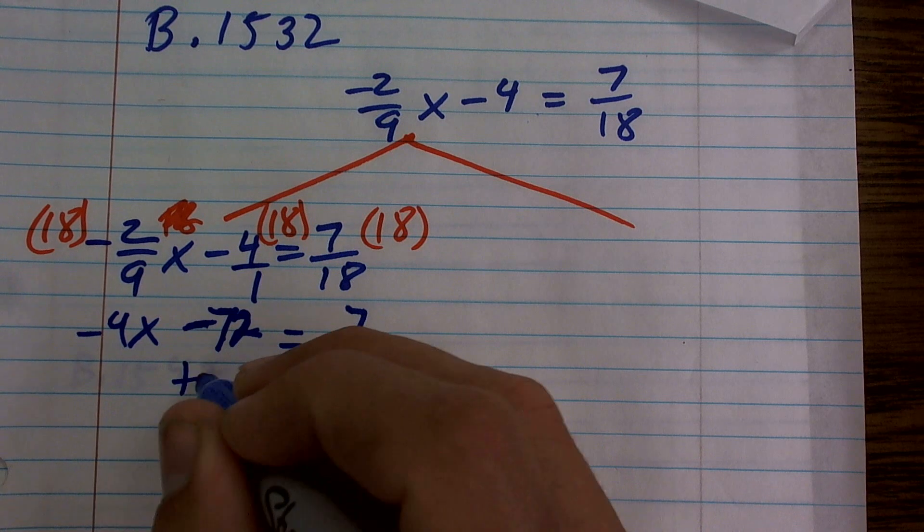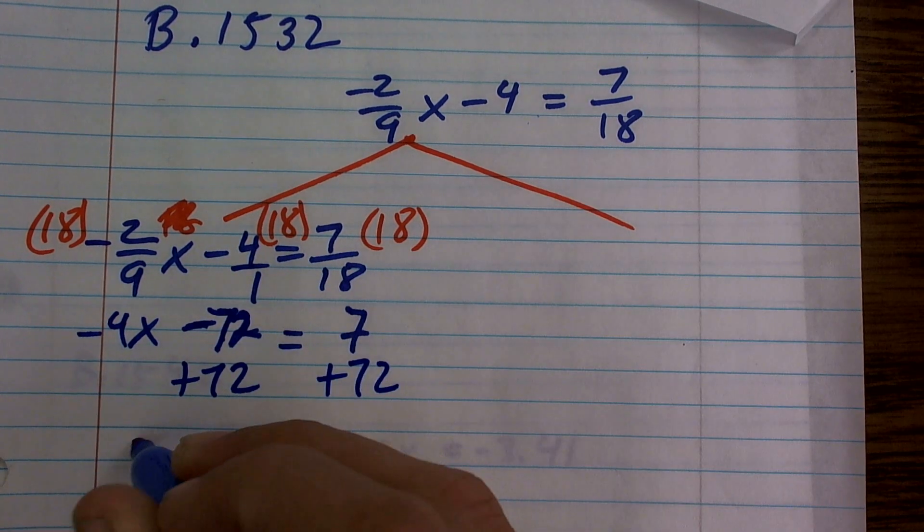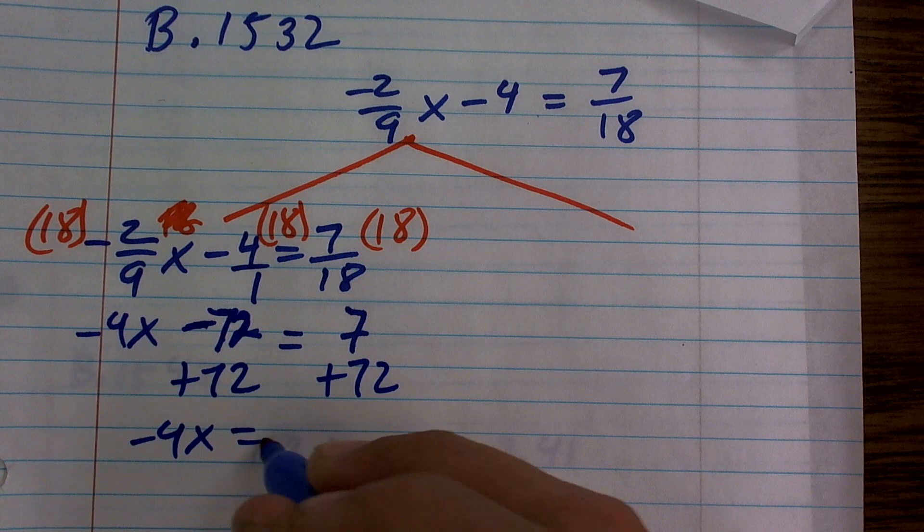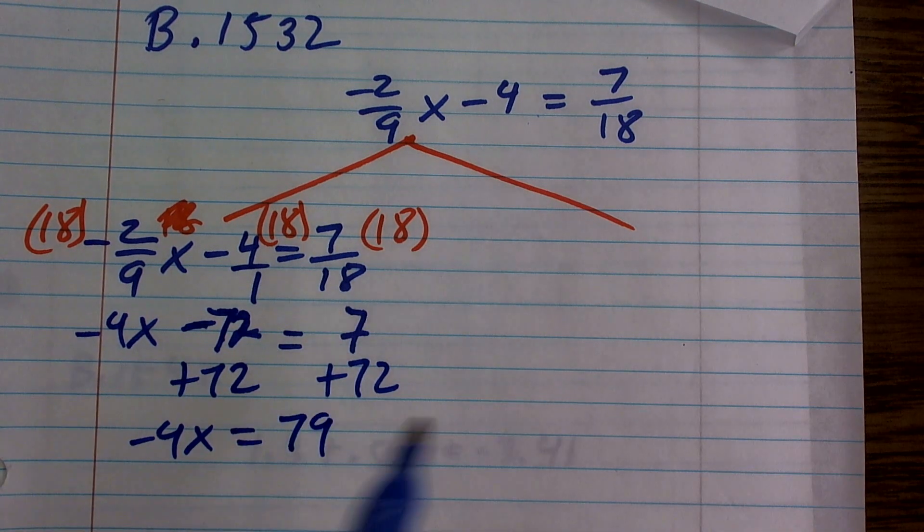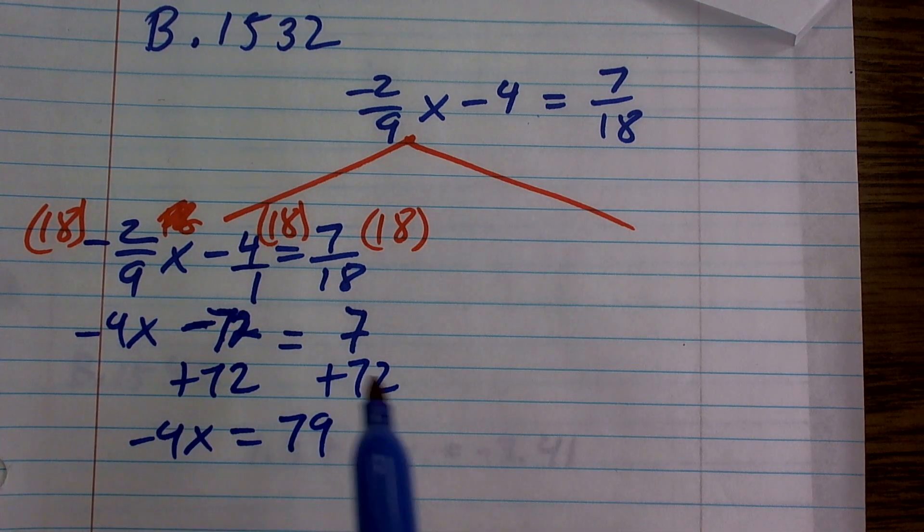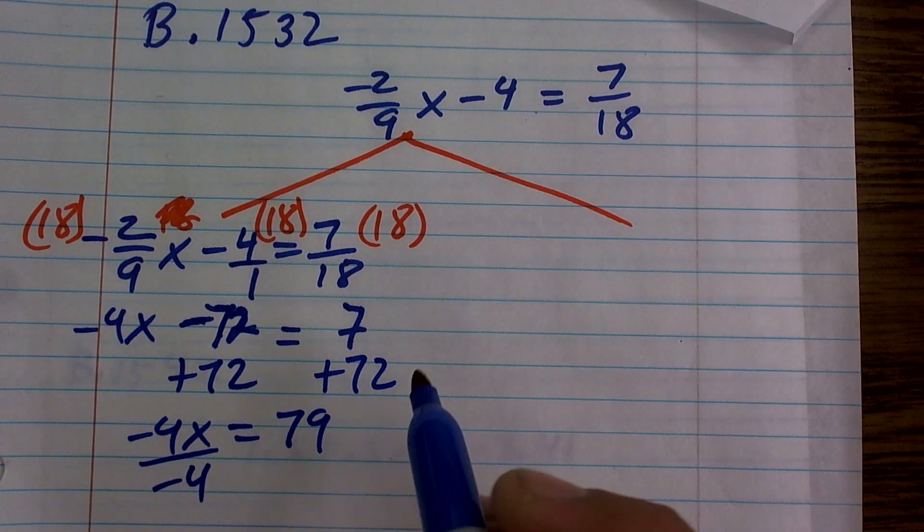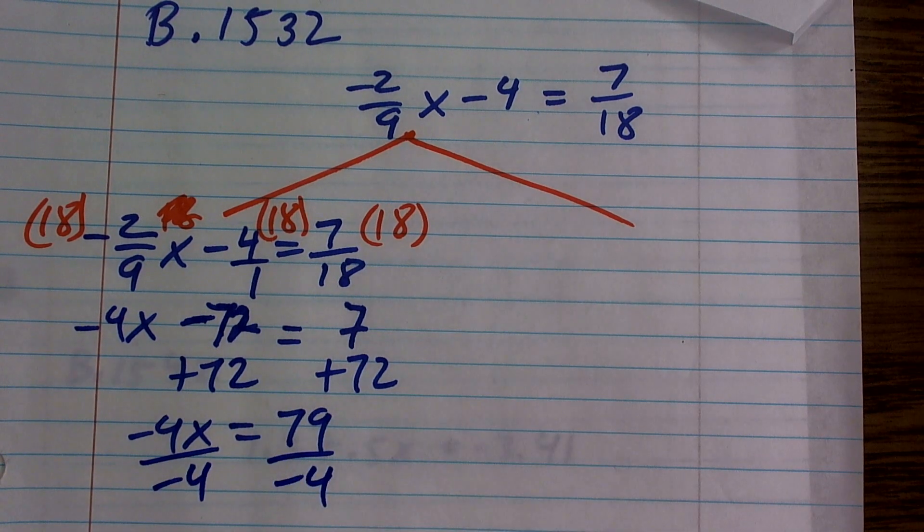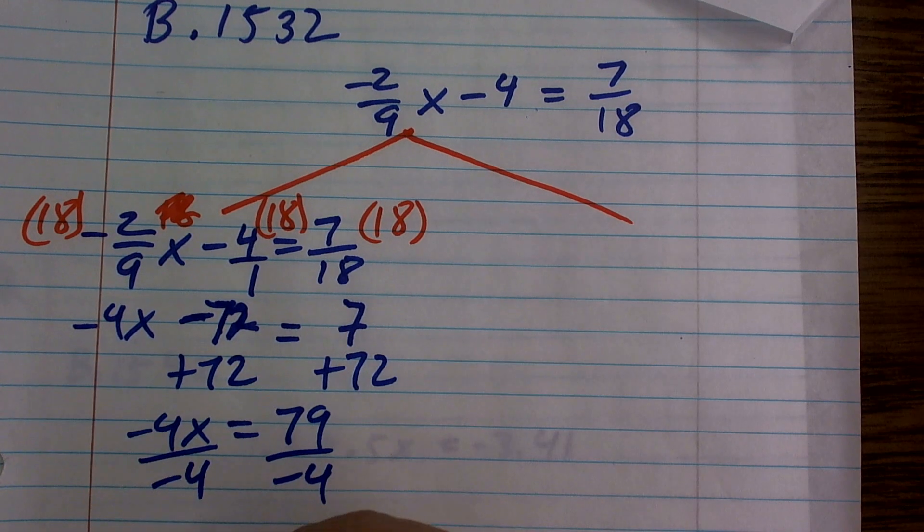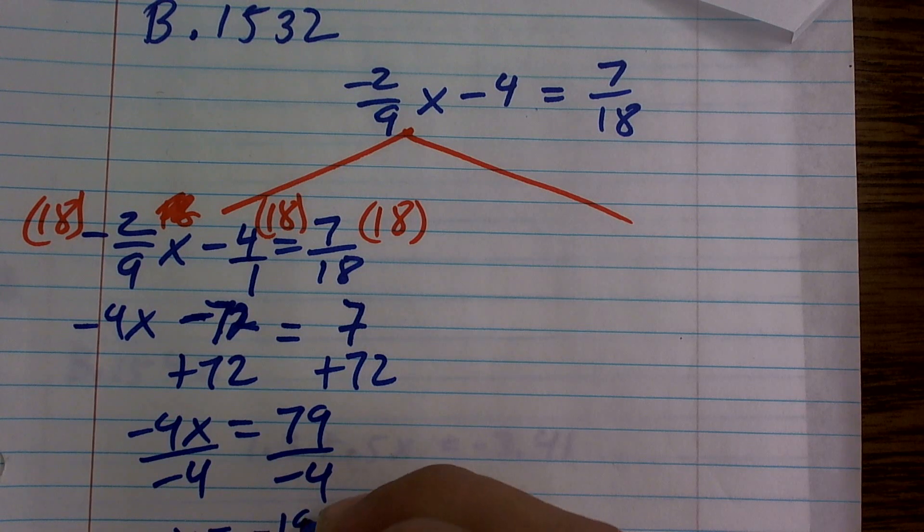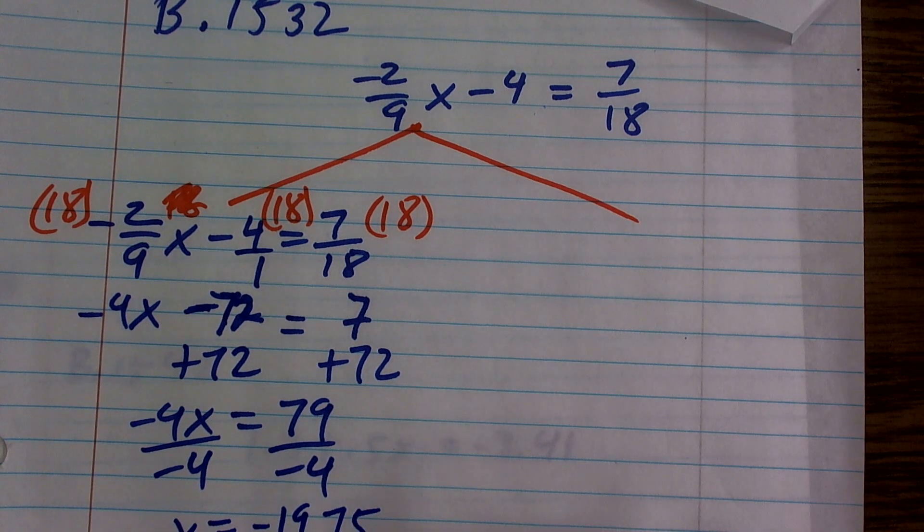Now, what I can do is I can add 72 to the other side. So I get negative 4x equals 79, right? Because I have a two-step equation. So I undo subtraction by adding on both sides. Now I'm going to undo multiplication of a negative 4 by dividing by a negative 4. And then I'll just go ahead and take a look at my calculator. Is going to be x equals negative 19.75.